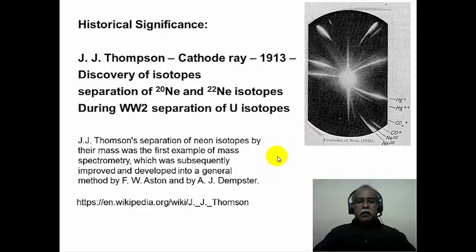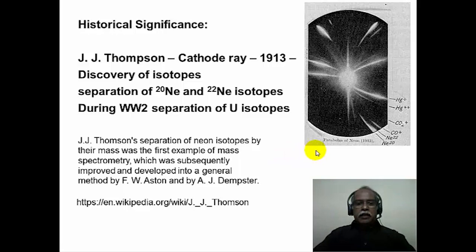JJ Thomson, during his investigation of cathode ray tubes and discovery of the electron, discovered the isotopes of Neon-20 and Neon-22. He separated them using a mass spectrometry technique in 1913. During World War II, separation of the uranium isotope for the enrichment of radioactive uranium was also undertaken using this technique.